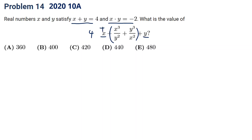Making the same denominator, the top will be x to the fifth plus y to the fifth. And here x squared y squared equals 4. So basically we just need to find x⁵ plus y⁵.